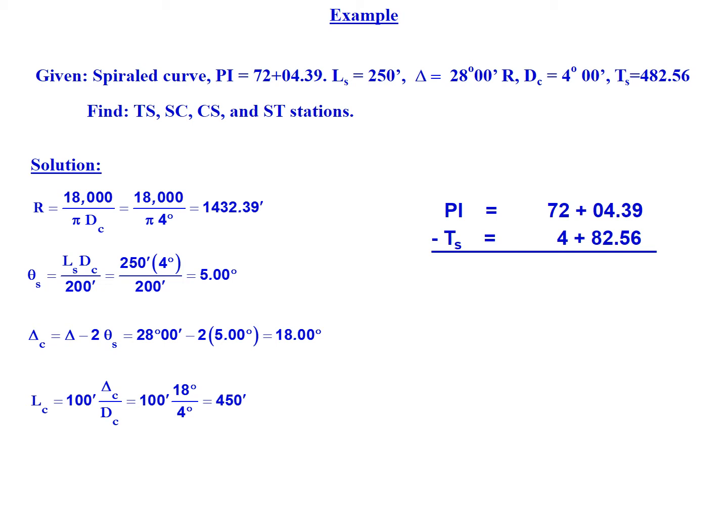Now we can start working on our calculations for our stationing. We take our PI station of 72 plus 04.39 and subtract off our tangent length, T sub s, of 4 plus 82.56. This gives us our TS point which is 67 plus 21.83.